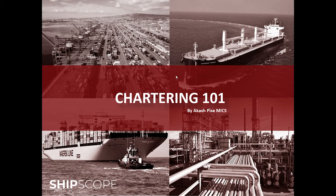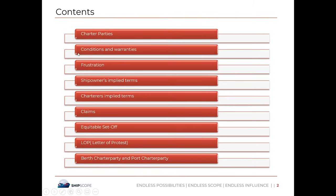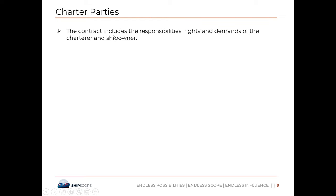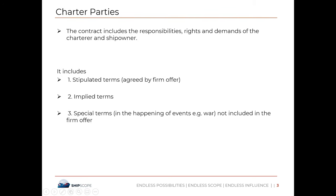Welcome to lecture number four in Chartering 101. Today's content: we're going to study charter parties, looking into conditions and warranties, frustration, ship owner's implied terms, charterer's implied terms, claims, equitable set-off, LOP, and berth charter party versus port charter party. A charter party is a contract giving the responsibilities, rights and demands between the principals — charterer and ship owner — and consists of stipulated terms, implied terms, and special terms on a case-by-case basis.